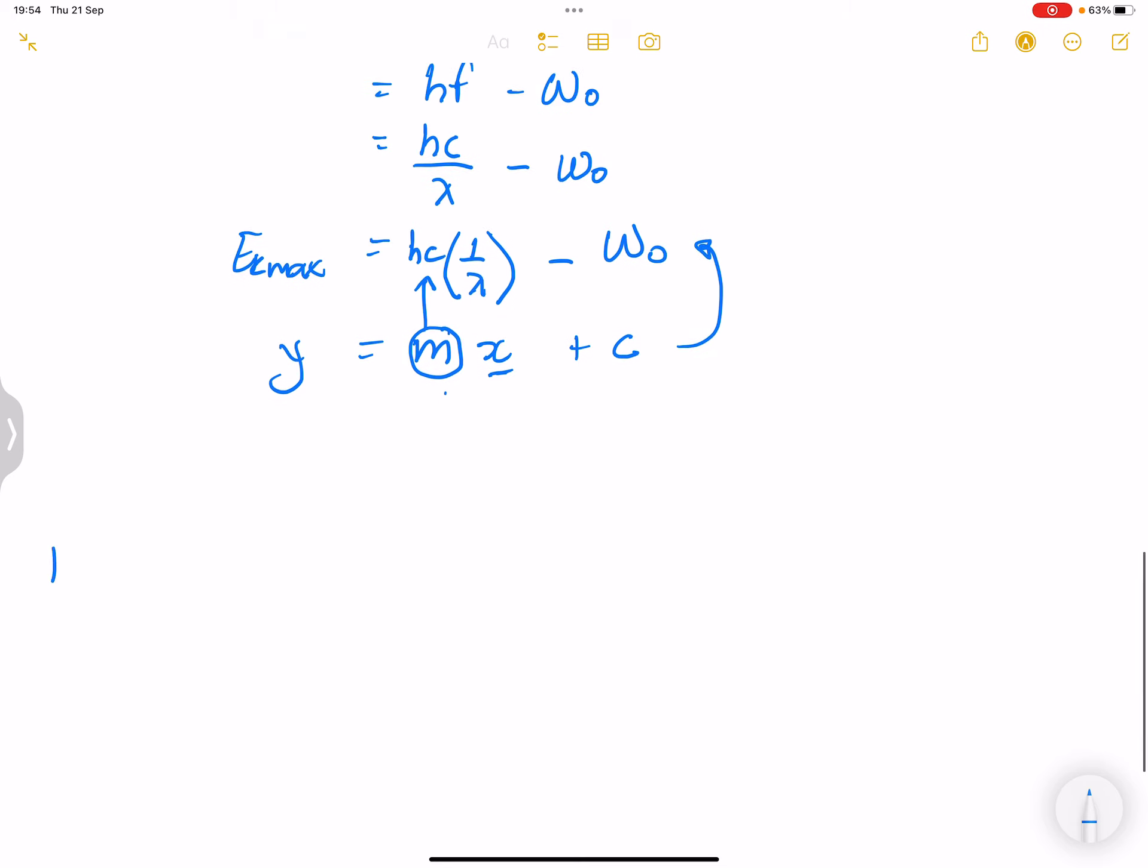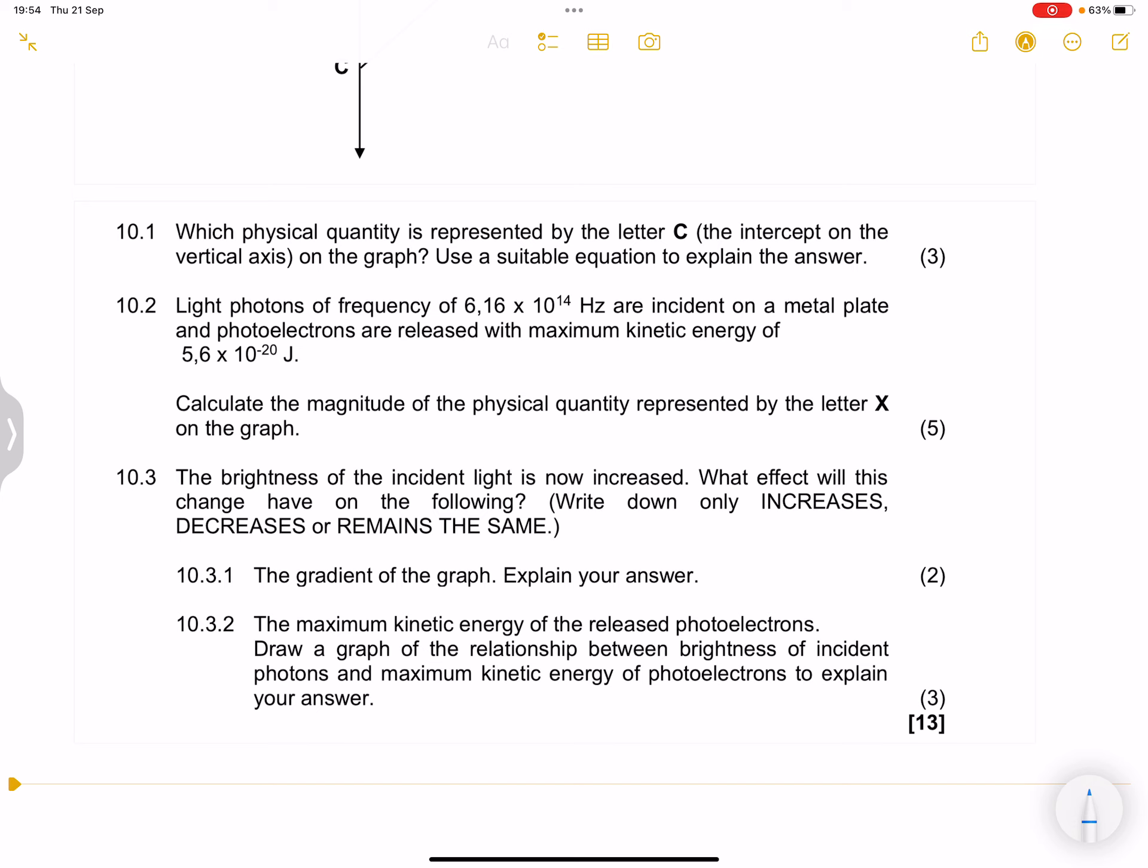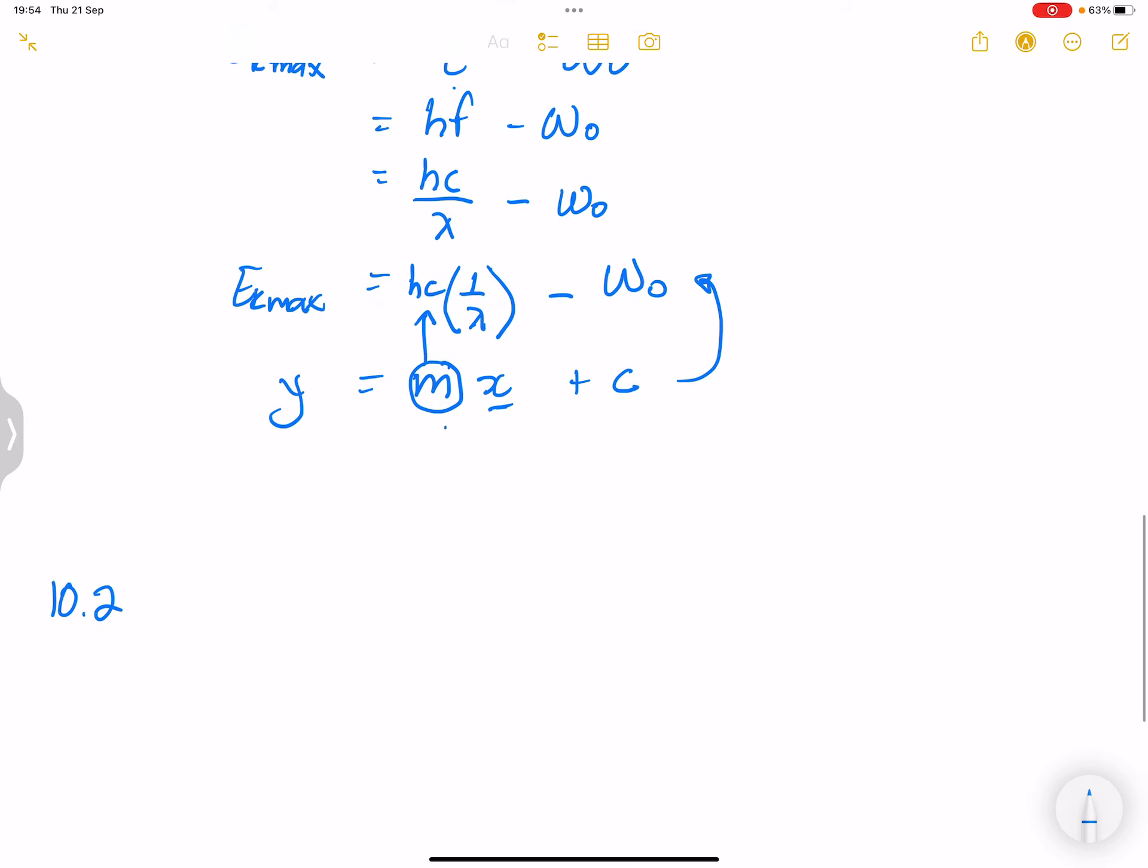So I hope that you understood that, ladies and gents. So let's go to the second question. They say light photons are of frequency 6.16 times 10 exponent 14 hertz. So they're giving us the frequency of our photons. It's 6.16 times 10 exponent 14 hertz. So we've got our frequency.